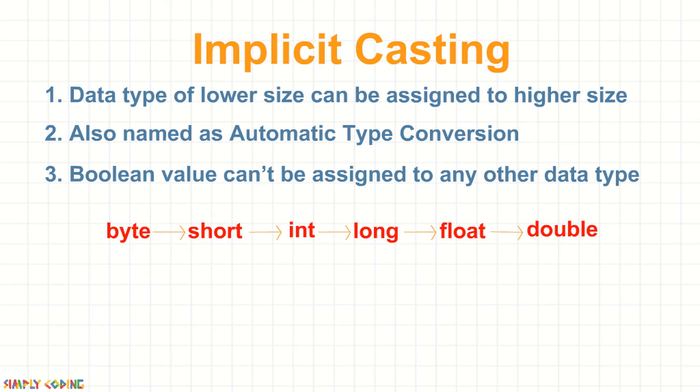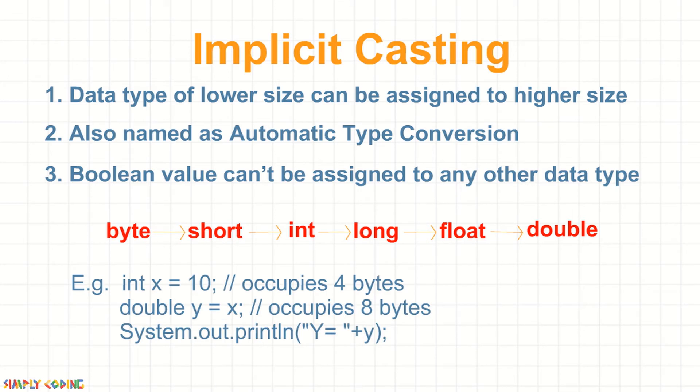So in this short example over here, we have an integer value of 10 which is assigned to double, which occupies 8 bytes. Now when we print the number, you will see that instead of 10, it prints 10.0.